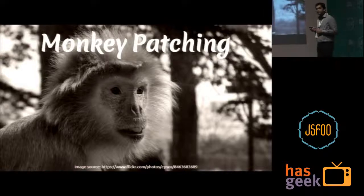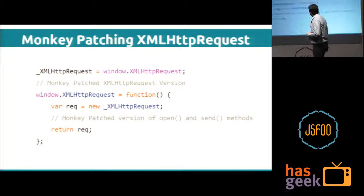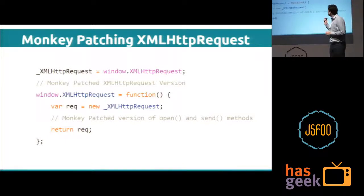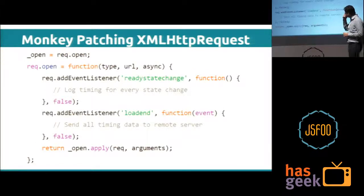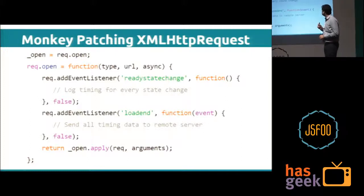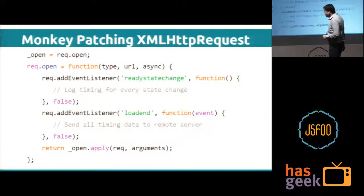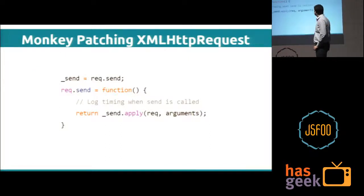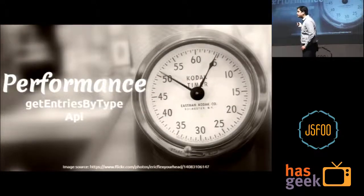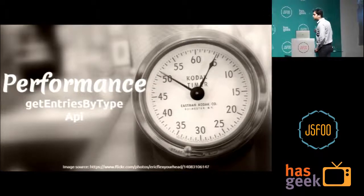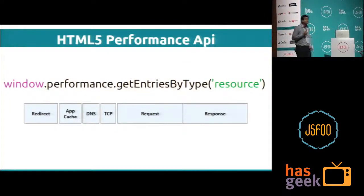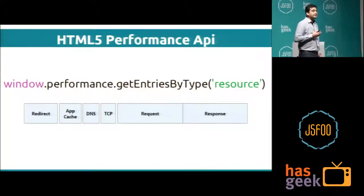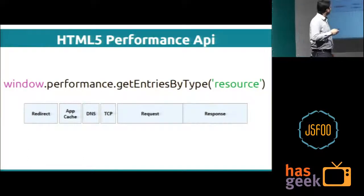The technique is called monkey patching. We save the original XMLHttpRequest to a variable, then define our own variable over it and patch it. We patch the open method and add two listeners: a ready state change listener and a load listener, then call the original open method. Similarly this is done for the send method. Just as there is a Performance Timing API for page load, for resources there is also an API — window.performance.getEntriesByType('resource') — which gives key metrics like app cache time, DNS, TCP, request, and response timings.